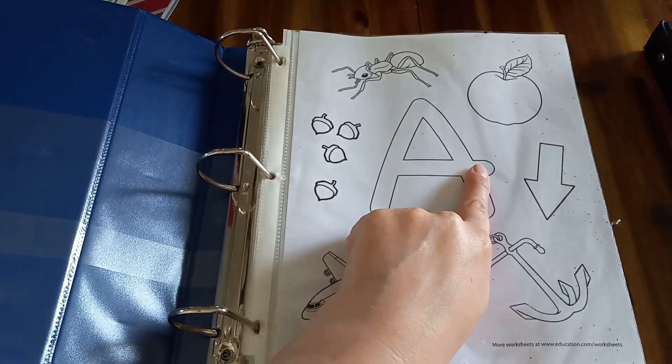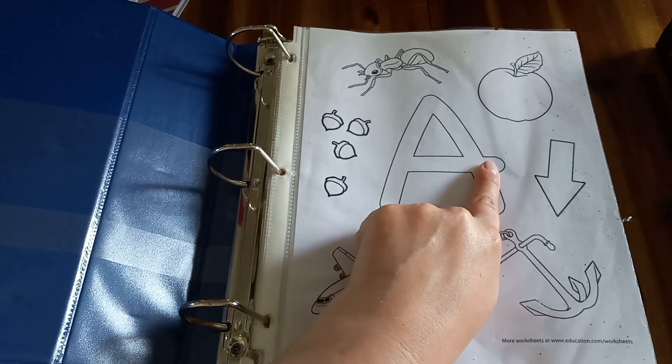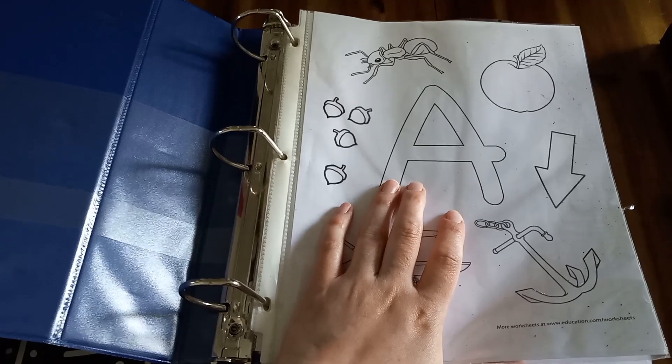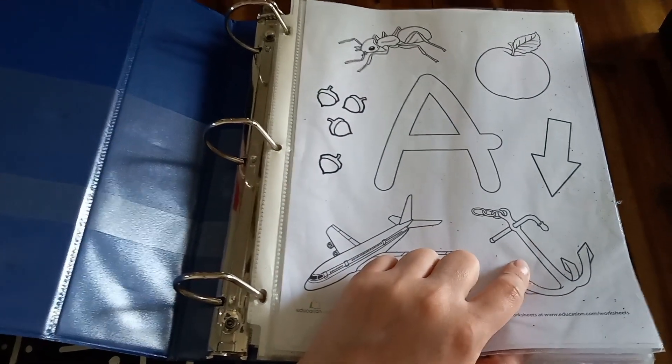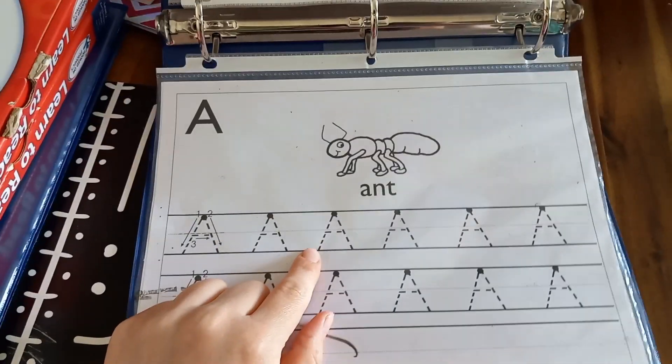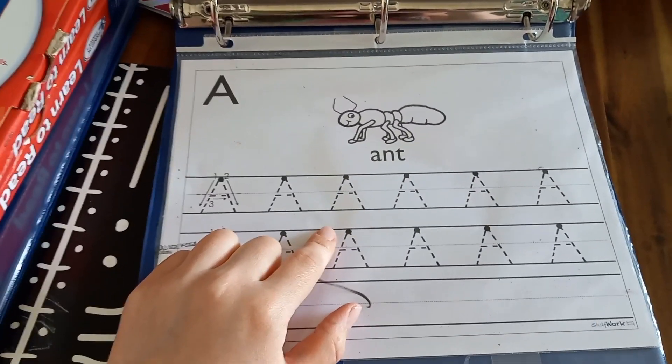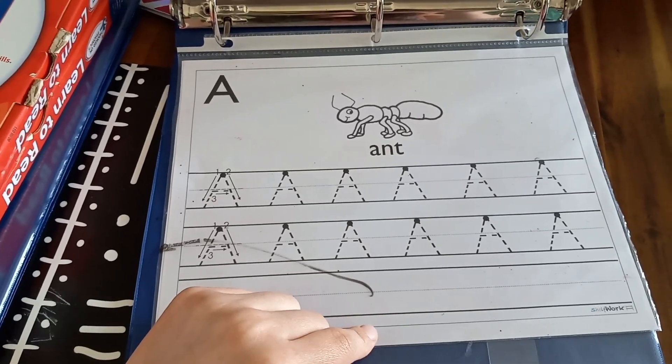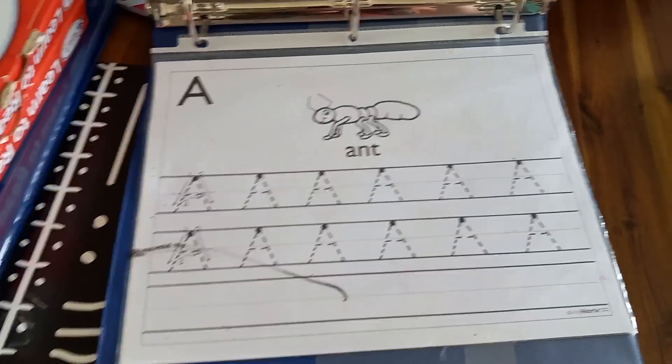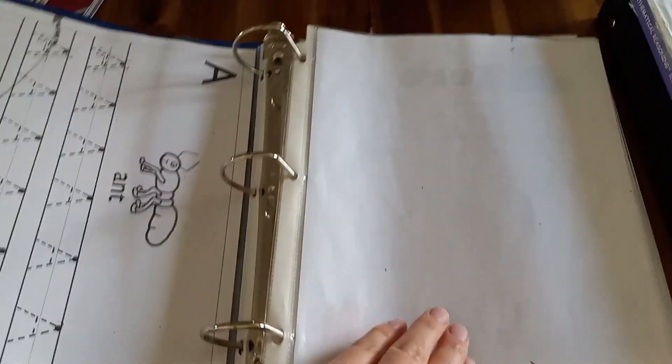Now I did do a video on some of the manipulatives that I have for the kids. I'll leave that linked below in case you want to see that. So after they fill in the letter and they color the pictures, they go on to tracing the letter. So very simple. A for ant. I start with capital letters and get them used to tracing and writing capital letters. And then I move on to a sheet that has both capital and lowercase. And I think I've made a video on that as well.